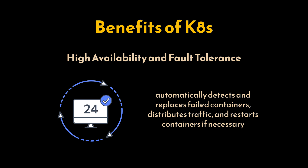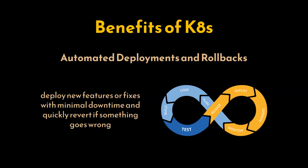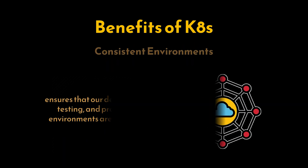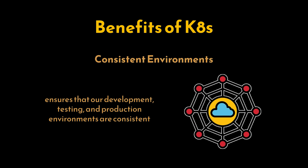Next is high availability and fault tolerance. Kubernetes ensures our application is highly available and resilient to failures — it can automatically detect and replace failed containers, distribute traffic, and restart containers if necessary. Also, automated deployments and rollbacks: with Kubernetes we can automate the deployment process including rolling updates and rollbacks, meaning we can deploy new features or fixes with minimal downtime and quickly revert if something goes wrong. Additionally, efficient resource utilization: Kubernetes schedules containers based on their resource requirements and available resources, ensuring efficient use of infrastructure, reducing costs and improving performance.